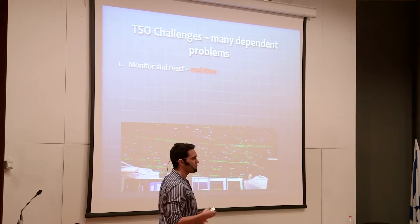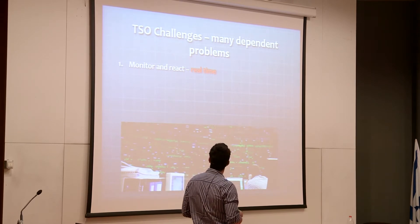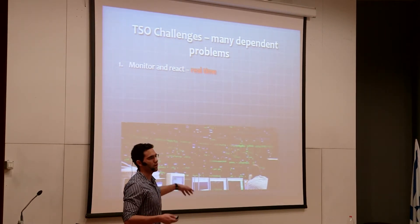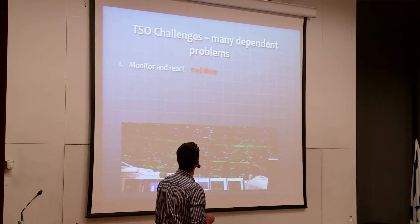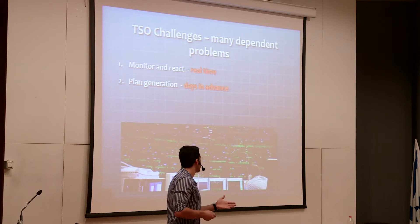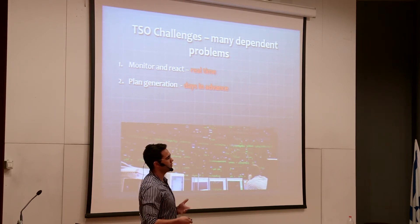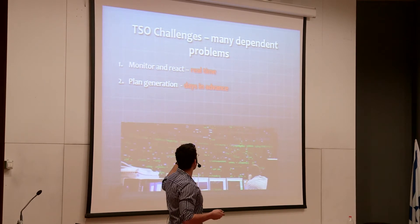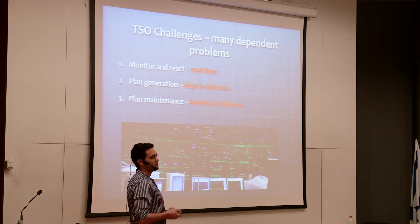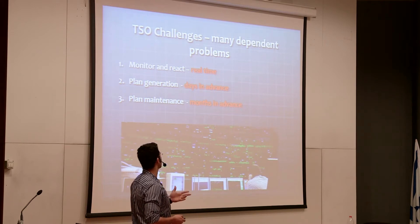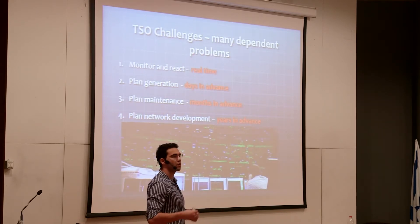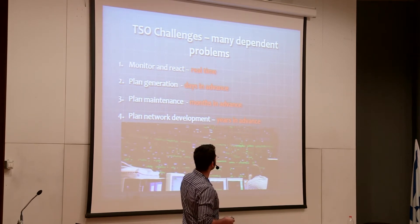First, in real time — every few minutes — they need to monitor and react to bad events. A team in the control room keeps track of real-time events. In addition, they need to plan generation days in advance, specifying which generator participates when, so that real-time monitoring and the ability to react are always available. They also plan maintenance months in advance. And lately, there's network development — how to expand the network — with projects that have a lifespan of years.